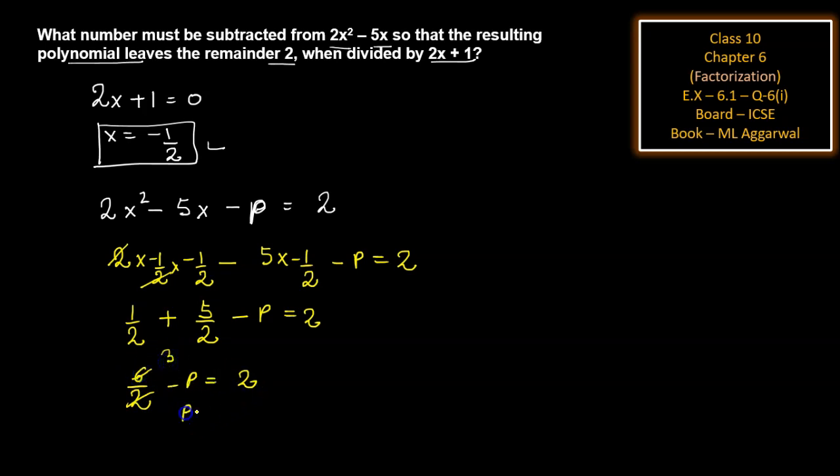This means 3 - p = 2, so p = 3 - 2 = 1. Therefore, the value of p is 1, meaning the number to be subtracted is 1.